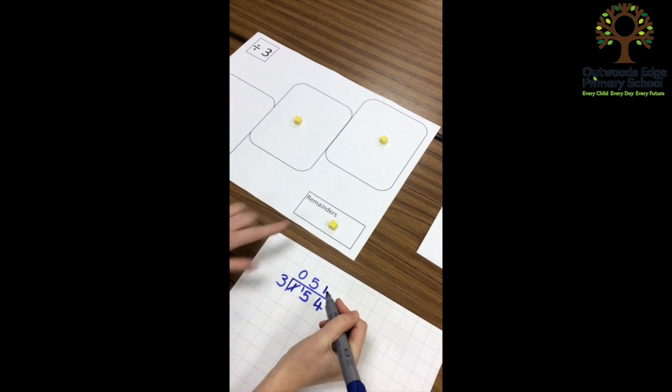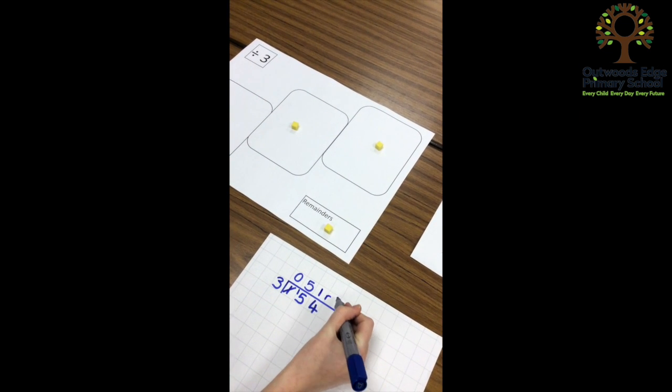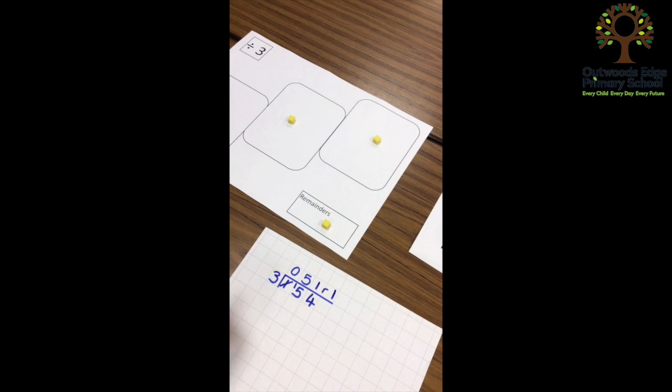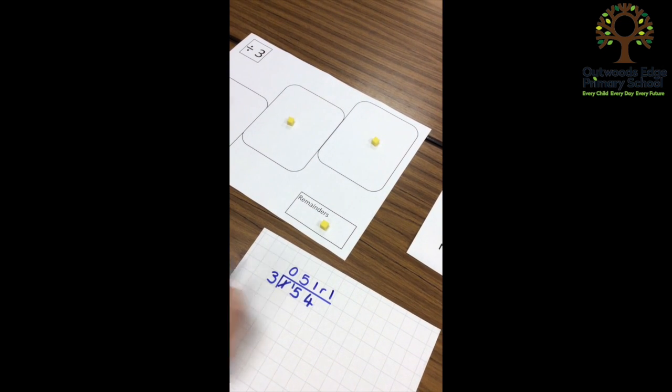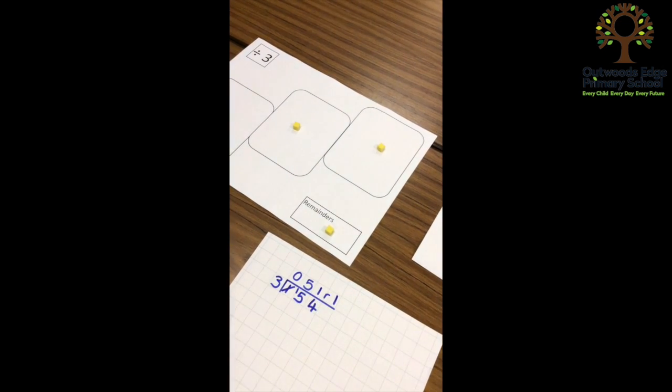Then I look at my remainders, and my answer to 154 divided by three is 51 remainder one.